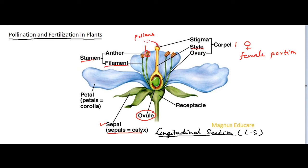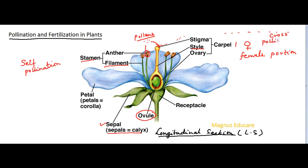If pollen comes from the same plant and sticks to the stigma, it is known as self-pollination. Fertilization must occur within the same species. If pollen comes from a different plant of the same species — from foreign flowers of the same species — and attaches to the stigma, this is known as cross-pollination.